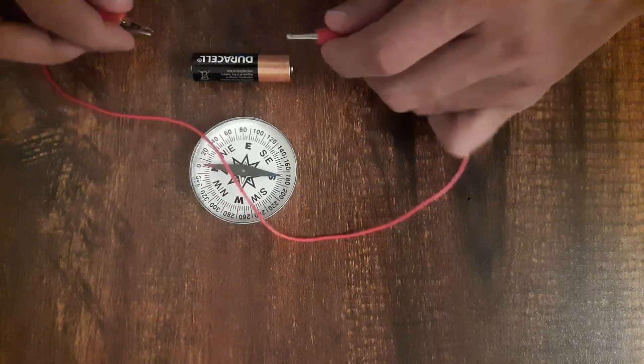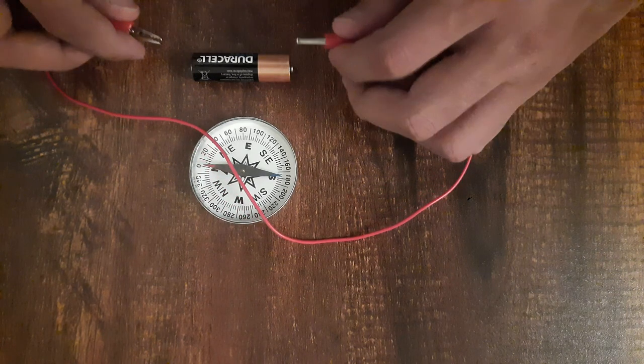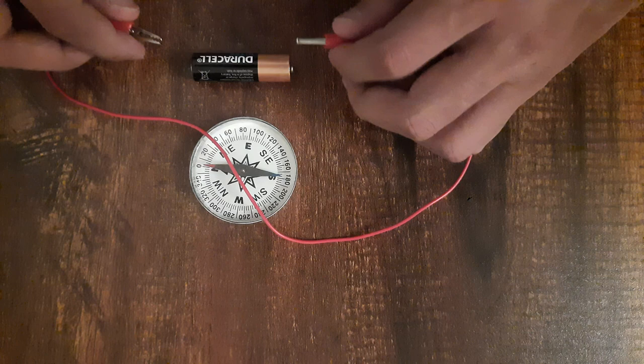Now what I'll do is bring these two alligator clips in contact with the two terminals of the cell, and I want you to predict what will happen. Do you expect to see any kind of behavior by the magnetic compass? Think about it.